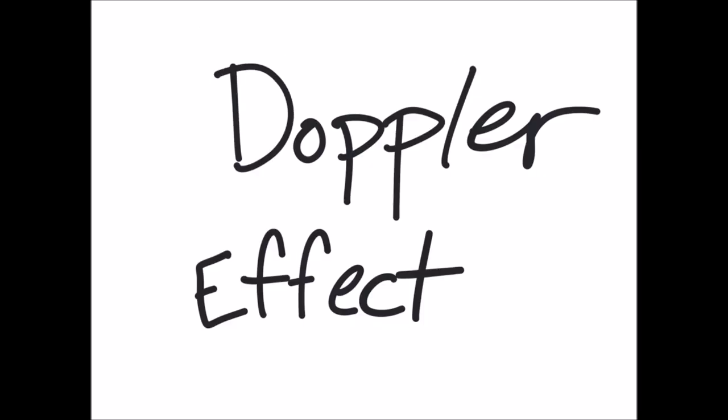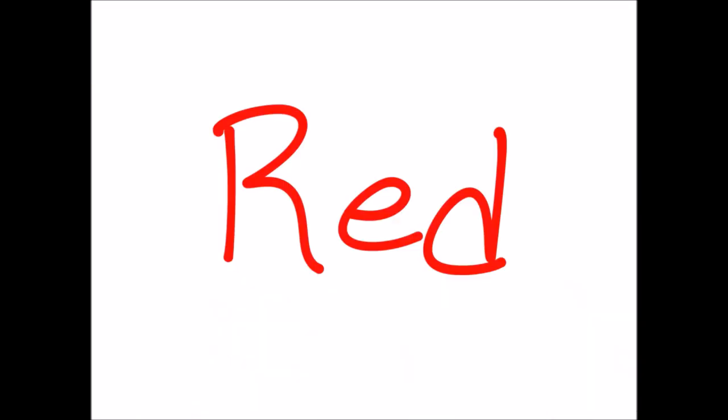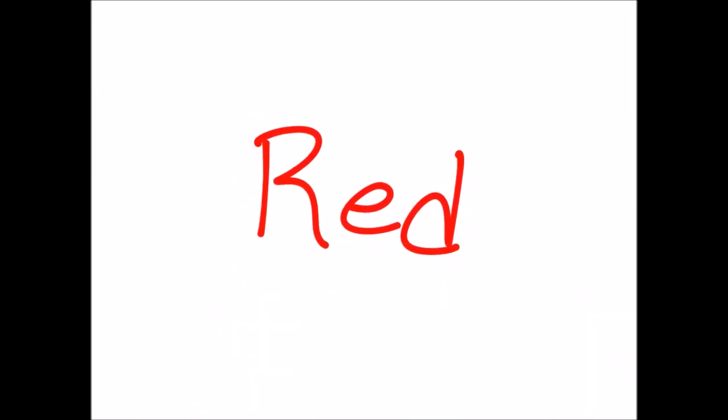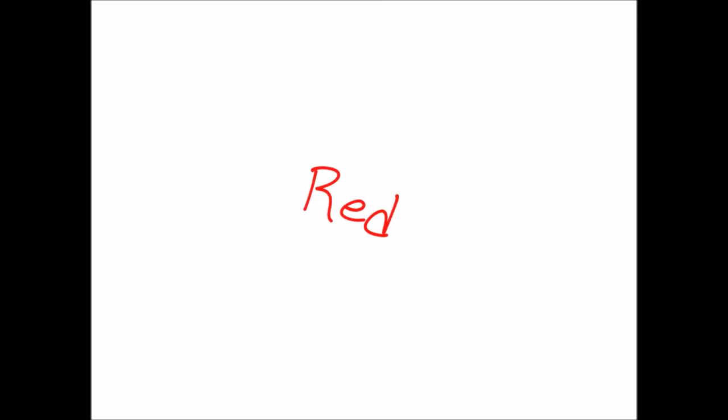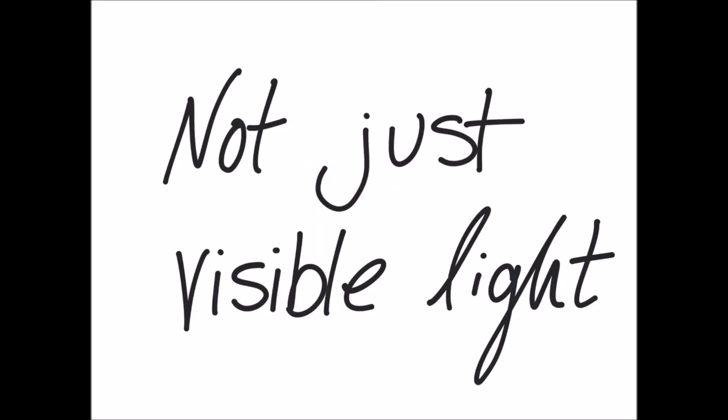Redshift and blueshift are part of the Doppler effect. As the source of the light moves towards you, the wavelengths compress and the coloring shifts towards the blue end of the spectrum. As the source of the light moves away from you, the wavelengths lengthen and the coloring shifts towards the red end of the spectrum. Redshift and blueshift are not limited to the visible light range. You can extend above and below the visible light range.